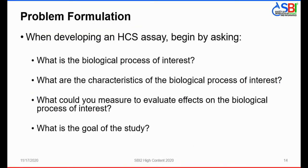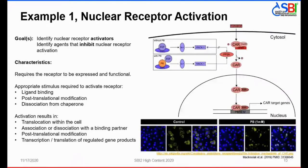Starting with problem formulation: when developing an HCS assay, you should ask what is the biological process of interest, what are its characteristics, what can you measure to evaluate effects of your test agents on it, and what is the overall goal of your study. In the next few slides, I will present several examples of HCS assays used to assess different types of cellular biology, which we'll use to illustrate concepts in HCS assay development throughout the remainder of the talk.